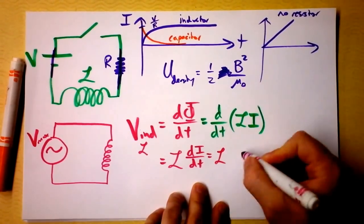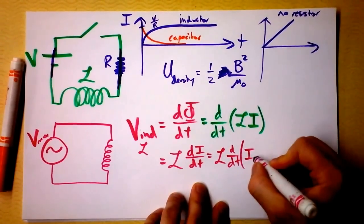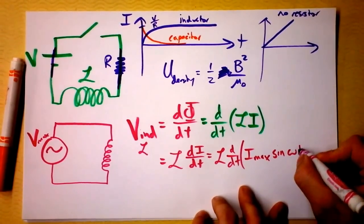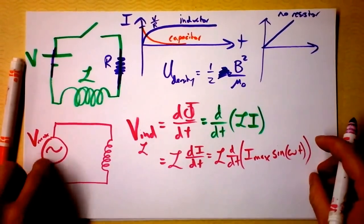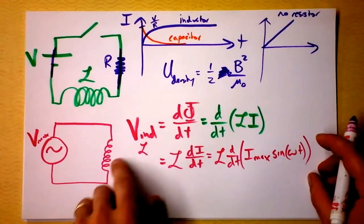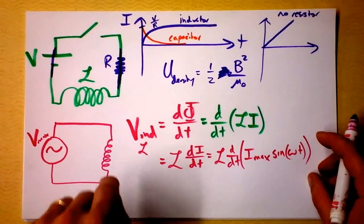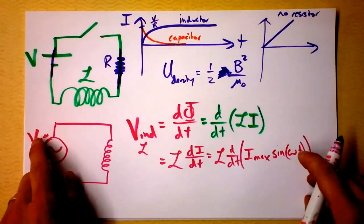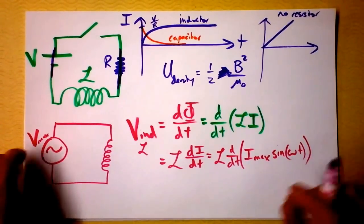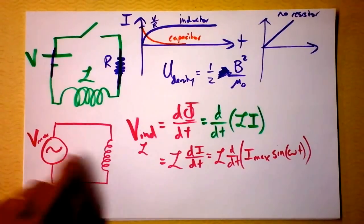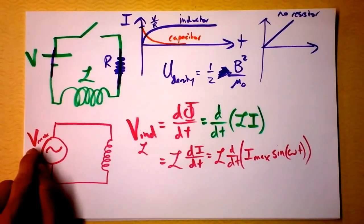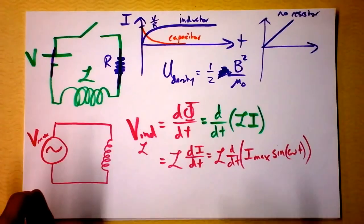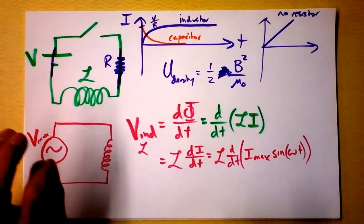This gives us the inductance times d/dt of [Imax · sin(ωt)]. That's the sinusoidal nature of this power supply giving us a sinusoidal current. But the current is not in phase with the voltage — with no resistor, we don't expect maximum current when there is maximum voltage. In fact, the current is going to be maximum when the voltage is zero, and the current is going to be zero when the voltage is maximum or minimum.